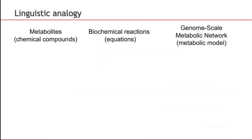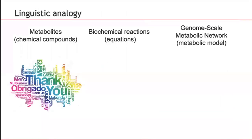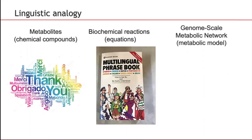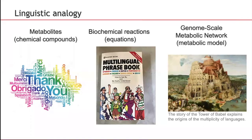We can have a linguistic analogy here with all these different resources. The problem is that metabolites are expressed using their own identifier in every database. The chemistry might be slightly different, and already at the level of metabolites there are some difficulties to build links between the different databases. With the biochemical equation the situation becomes more complicated, and if we go to the level of the genome-scale metabolic network, we end up in a situation where models published by different groups are very hard to compare and reconcile together.